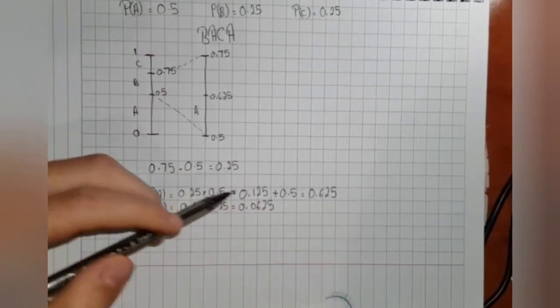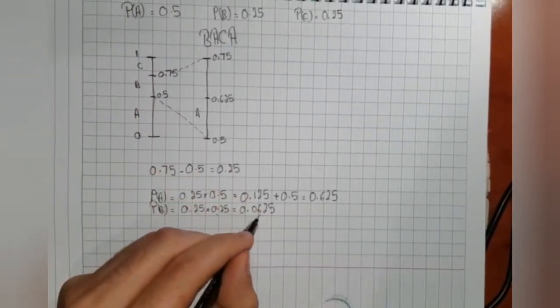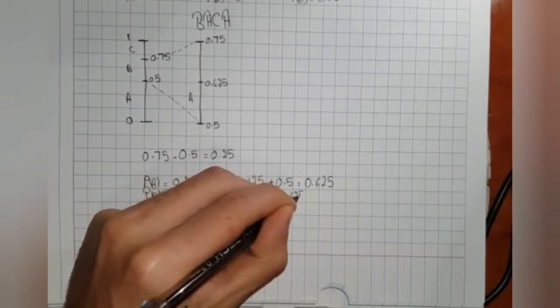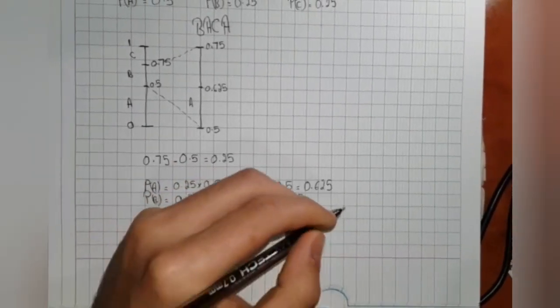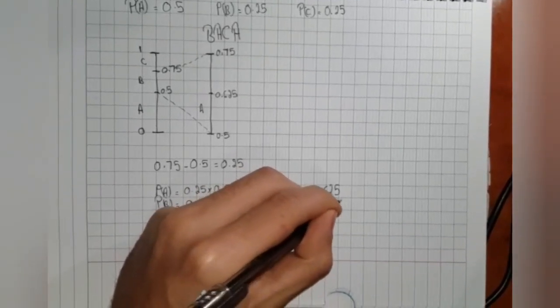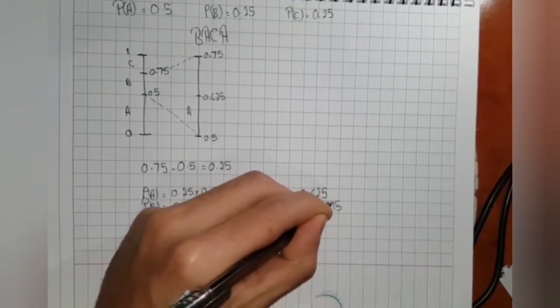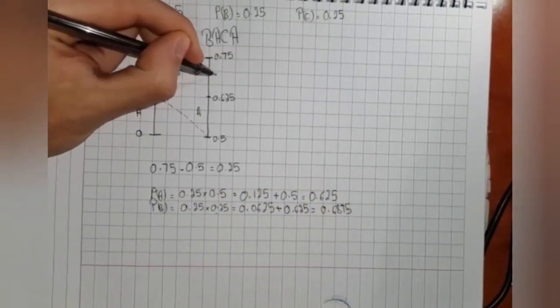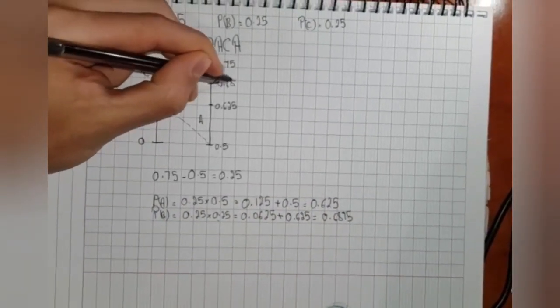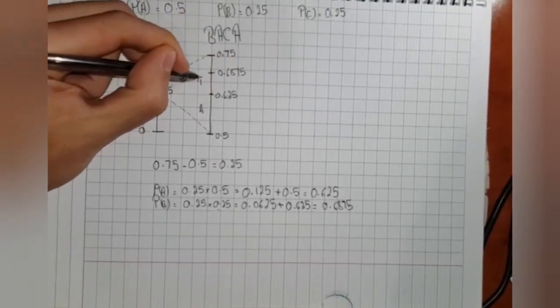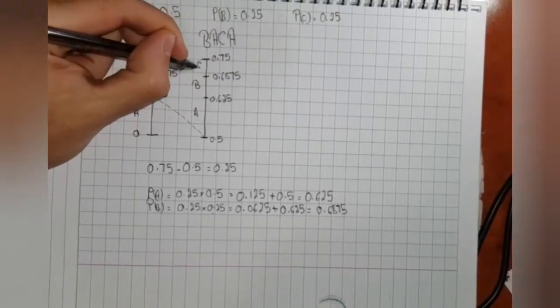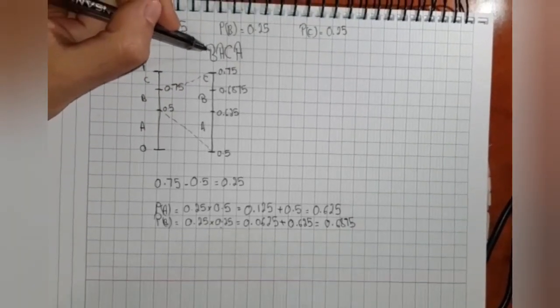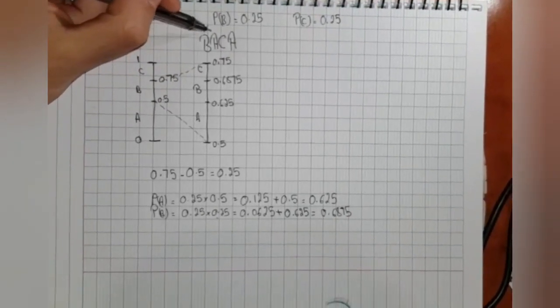To locate b, we will add 0.0625 with 0.625, and this will give us 0.6875. b is located here. This is the interval where b is located and c is located here. We found the interval for b and a.